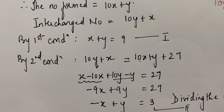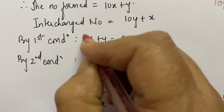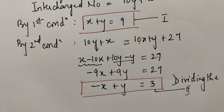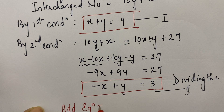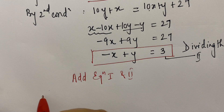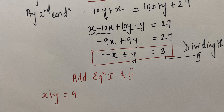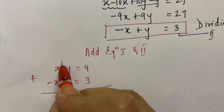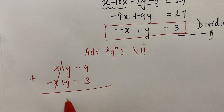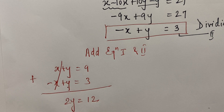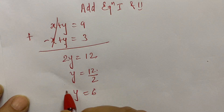Now we have Equation 1: x plus y equals 9, and Equation 2: minus x plus y equals 3. We will add Equation 1 and Equation 2. The opposite sign variables — x and minus x — will be cancelled. y plus y gives 2y, and 9 plus 3 is 12. So y equals 12 upon 2, which means y is equal to 6.